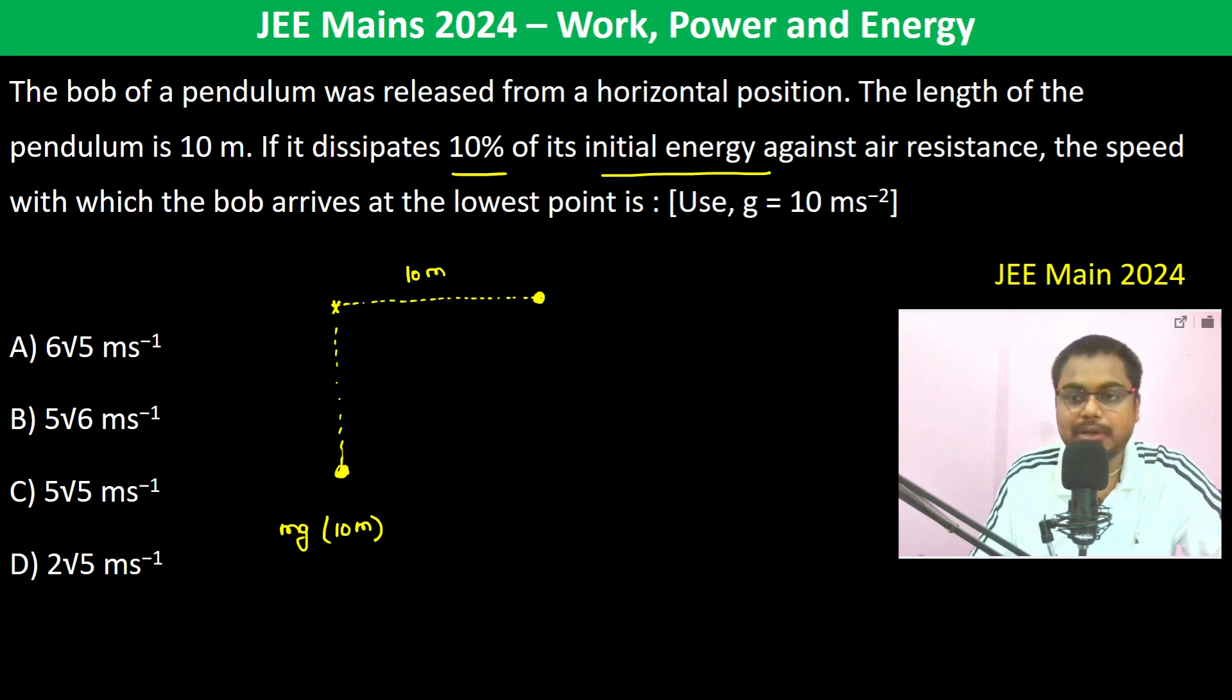But 10% of its energy is gone against air resistance, so 90% of energy is remaining. Therefore, this total energy times 90 percent should be equal to half m v squared.